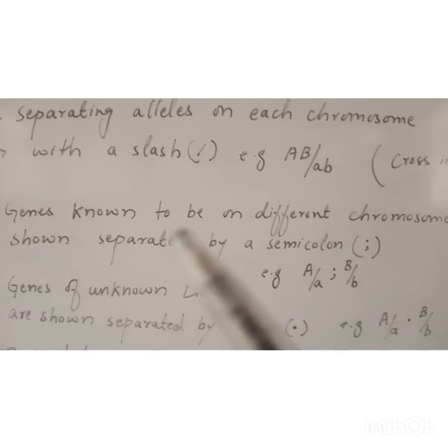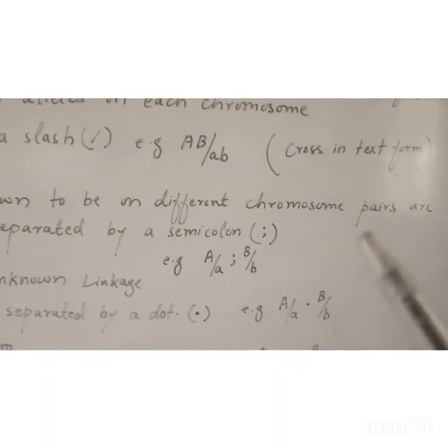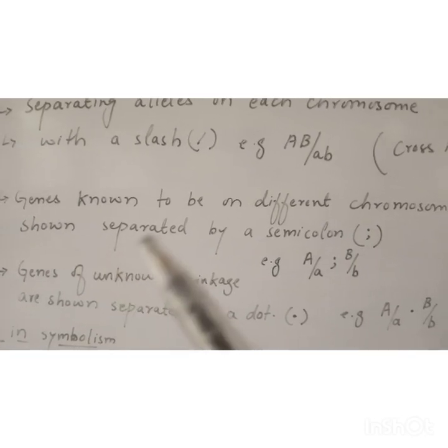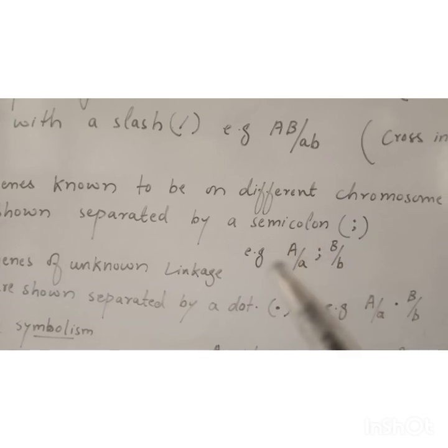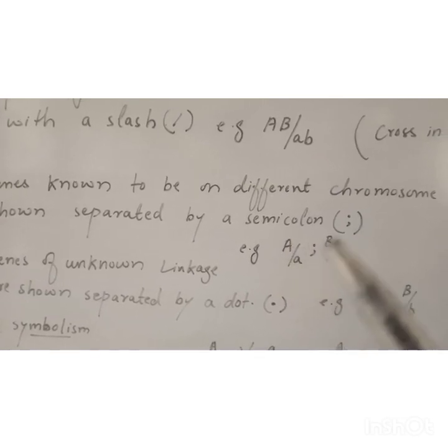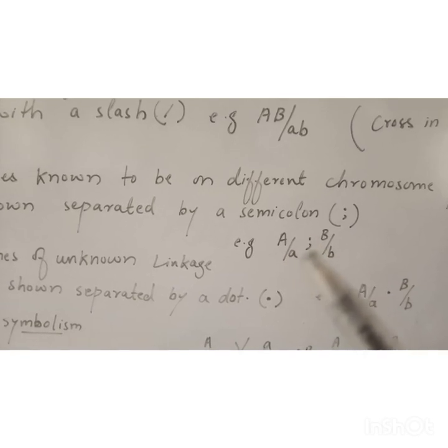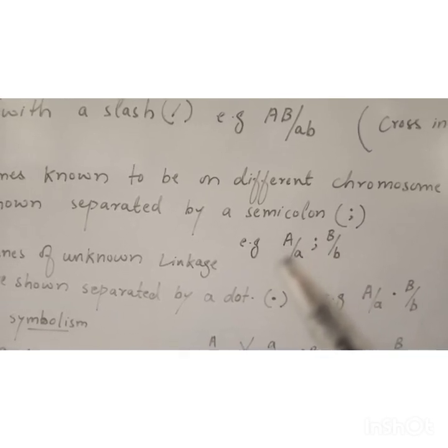Genes known to be on different chromosome pairs are shown separated by a semicolon. For example, A and A semicolon B and B. If the genes are on different chromosomes — one chromosome carrying A and the other carrying B — then they are separated by a semicolon to indicate they are on different chromosomes.